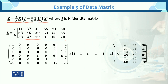The identity matrix here is of size 6 × 6. We compute I − (1/6) · 1 · 1ᵀ, where 1 is a 6 × 1 vector and 1ᵀ is a 1 × 6 vector, giving a 6 × 6 matrix. The diagonal entries become 1 − 1/6 = 5/6 and off-diagonal entries are −1/6.